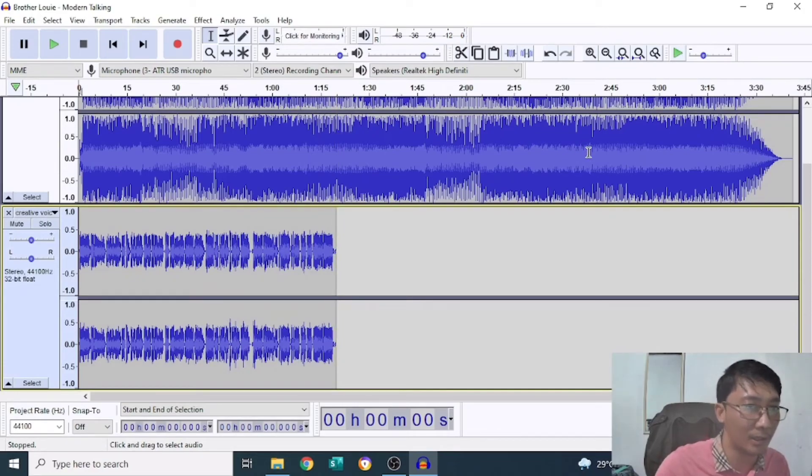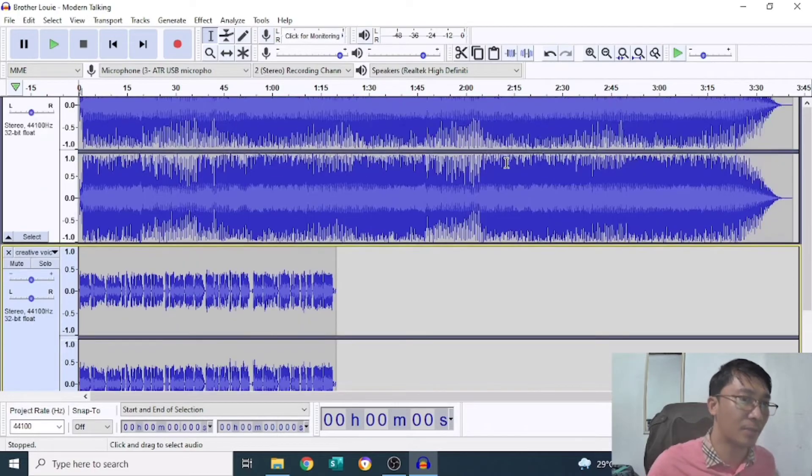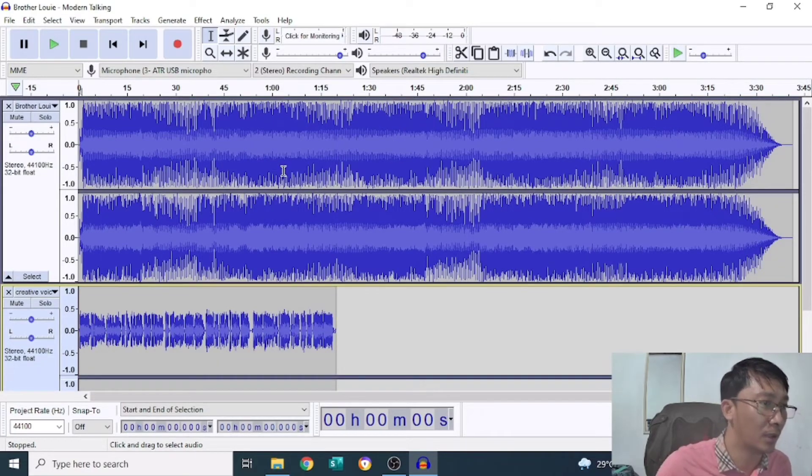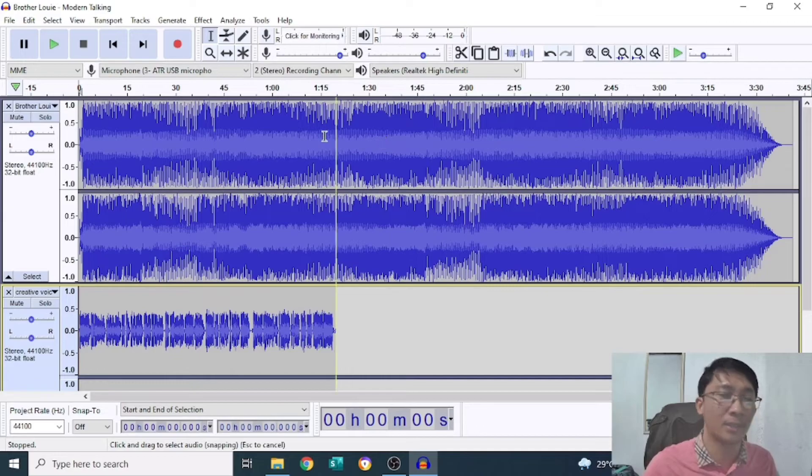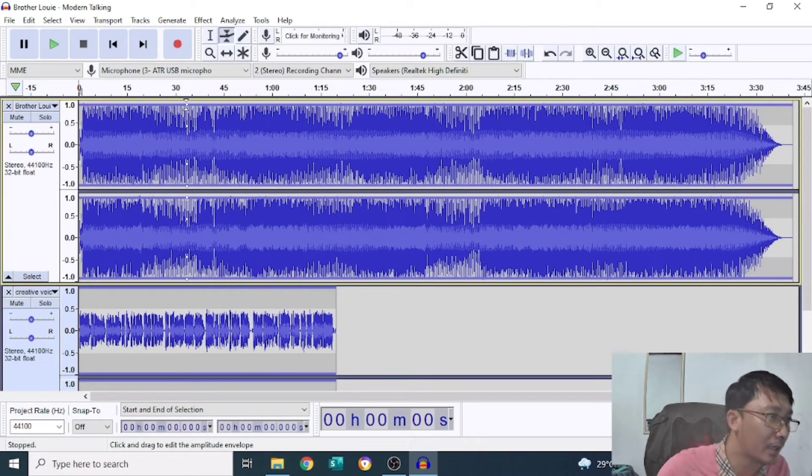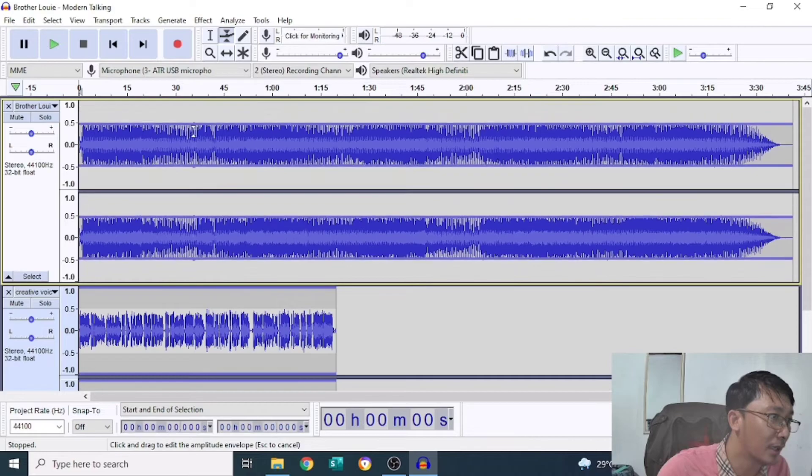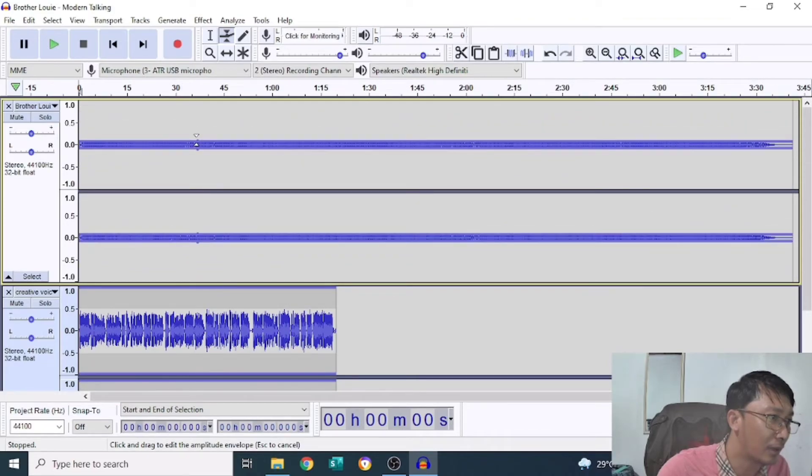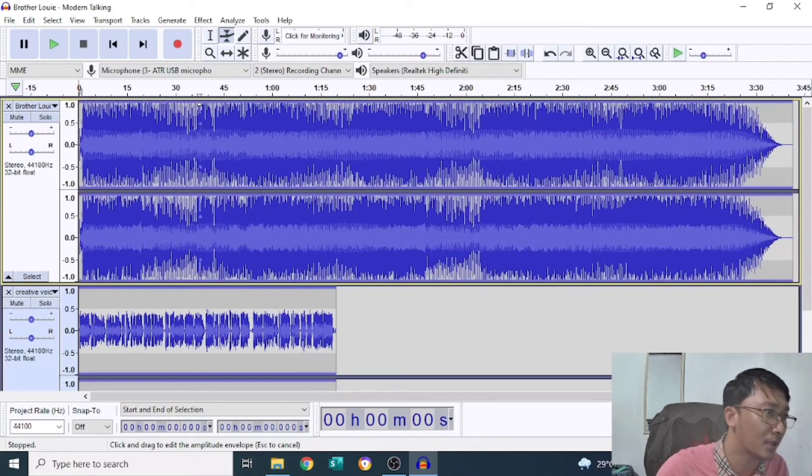Ito po yung audio natin. This is one. Obviously, pag nakita nating makapal, at medyo tumatama sa floor, and then yung pinaka-ceiling ng line, ibig sabihin, malakas po siya. What we are going to do next is for us to minimize by clicking the envelope tool. Nakikita natin yung portion, may line dito. Ibig sabihin, ninipis siya. Kasi, background nga lang po siya. I try muna natin yung pakinggan para makita natin yung lakas.